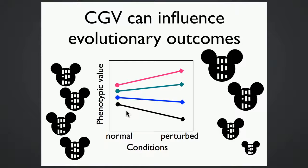Cryptic genetic variation can influence evolutionary outcomes. Under normal circumstances, in this population you have a certain range of phenotypes. And when we perturb this population, what cryptic genetic variation should do is increase the variation of these phenotypes in the population.